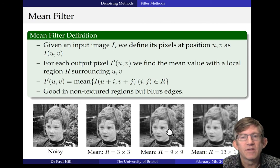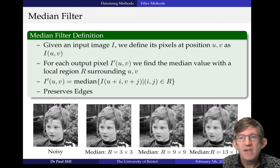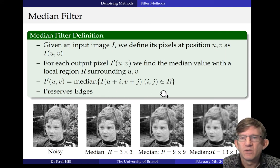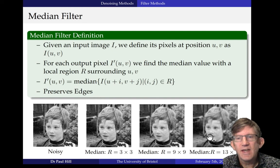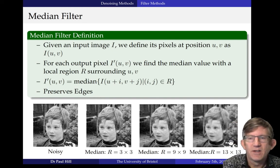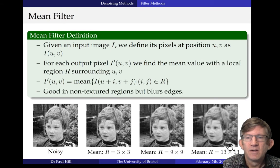One way of doing a better job is the median filter. The median filter also works on a region, and you can see that although it's a little bit blurred, if you look at his shoulder and compare the two, the mean filter is really blurring that region quite badly.